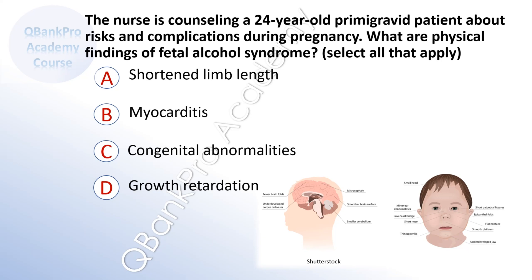The nurse is counseling a 24-year-old primigravid patient about risk and complications during pregnancy. What are physical findings of fetal alcohol syndrome? Select all that apply. A. Shortened limb length. B. Myocarditis. C. Congenital abnormalities. D. Growth retardation.